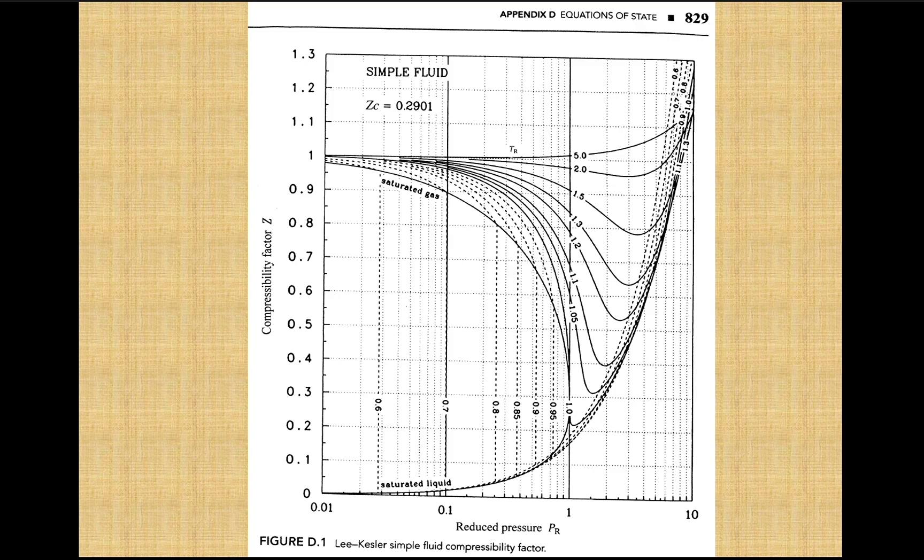Here is Lee Kessler's graph for the general compressibility factor. Along the x-axis is the reduced pressure and along the y-axis is the compressibility factor. These lines that curve between are the reduced temperature values.